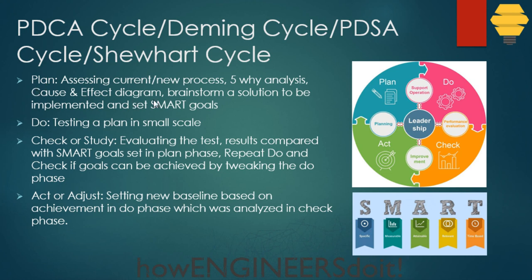To understand where the process lacks, we can do something like a 5-Why analysis or cause and effect diagrams, which are root cause analysis tools. Once we identify the root cause, we brainstorm and find a solution. Before implementing, we put these corrective actions into SMART goals.